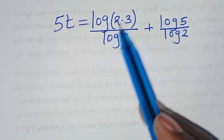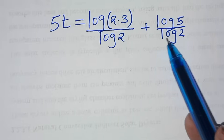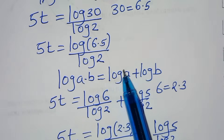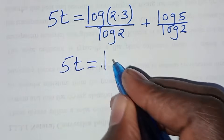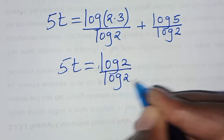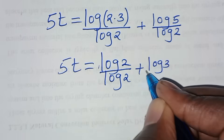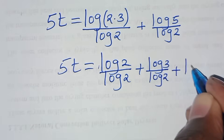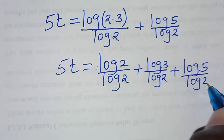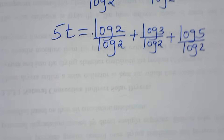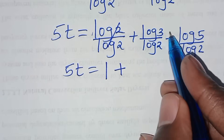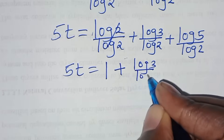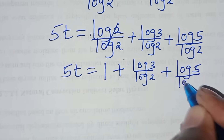This is in the form of log a times b divided by log 2, which we expand as log a plus log b. Applying this property, we have 5t equal to log 2 divided by log 2, plus log 3 divided by log 2, plus log 5 divided by log 2. Simplifying log 2 over log 2, this becomes 5t equal to 1 plus log 3 divided by log 2, plus log 5 divided by log 2.